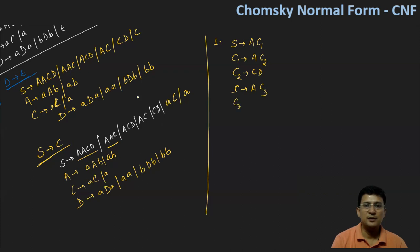CD becomes C2, and let's say C2 produces C and D. Then we resolve AAC. So S produces A and then let's say AC is C3. So C3 produces AC. Then for ACD, S produces A and CD — so this is A and C2. Similarly, for ACD another form, C4 produces ACD. So A produces AACD means A and then C1.